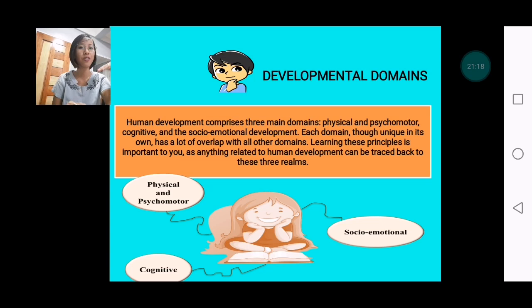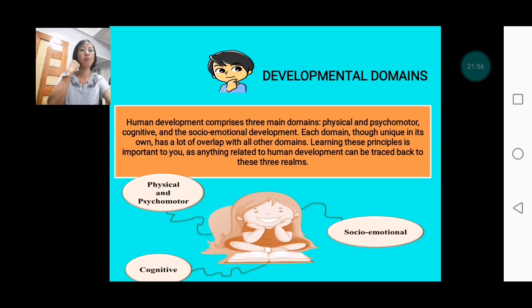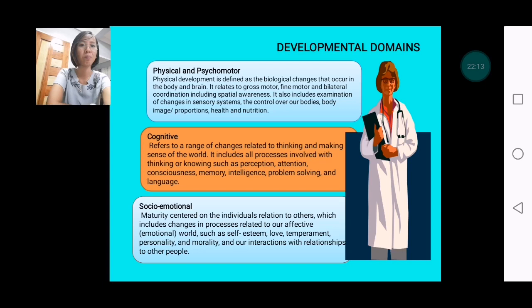Here are the developmental domains. Human development is divided into three domains: the physical and psychomotor domain, the cognitive domain, and the social-emotional domain. Each domain, though unique in its own way, has a lot of overlap with the other domains. Learning these principles is important because anything related to human development can be traced back to these three realms.